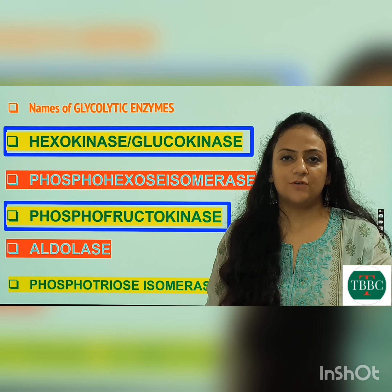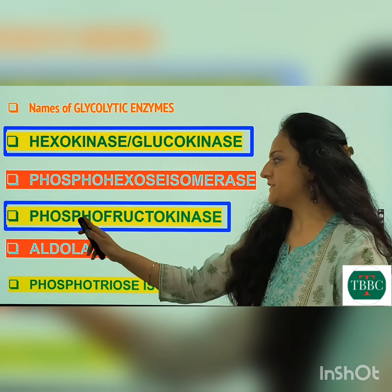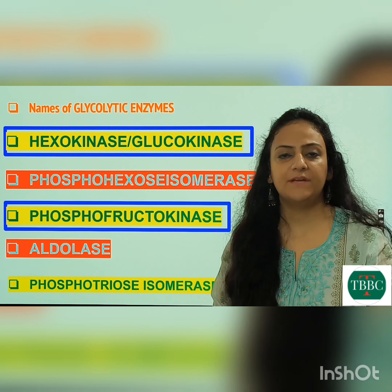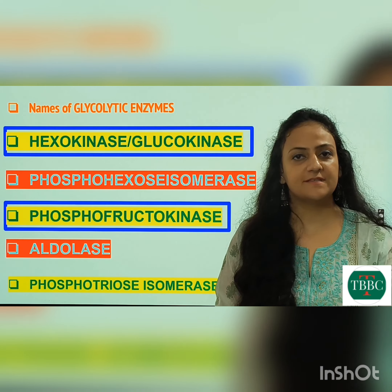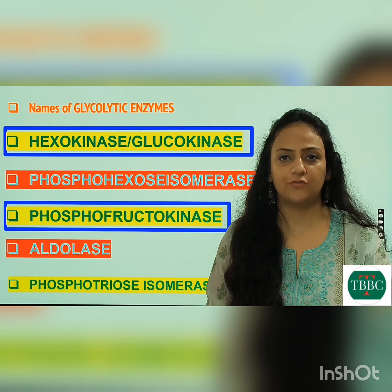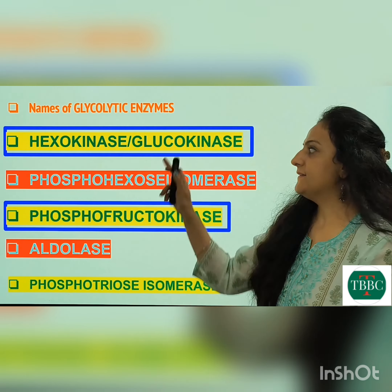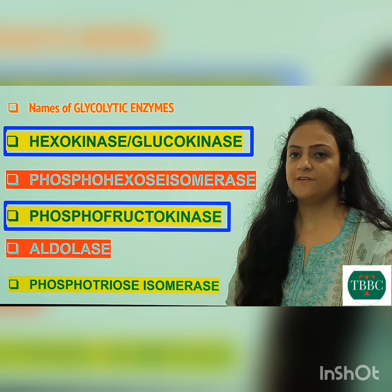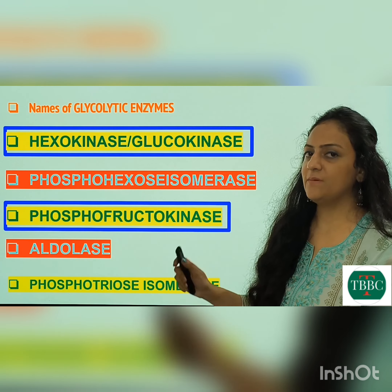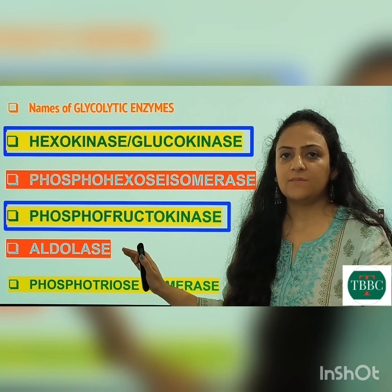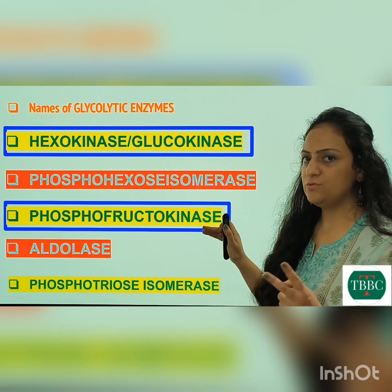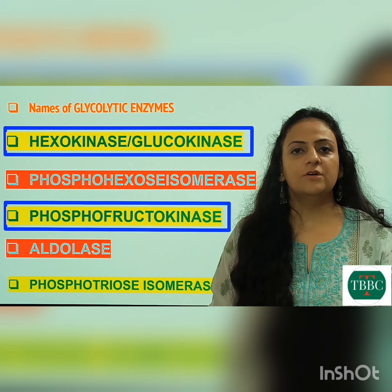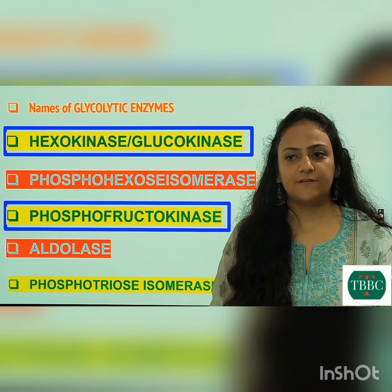Glucose 6-phosphate is converted to fructose 6-phosphate with the help of enzyme phosphohexose isomerase. Then fructose 6-phosphate is again phosphorylated with the help of enzyme phosphofructokinase in the presence of ATP and magnesium to fructose 1,6-bisphosphate. Up to this point it is the energy investment phase, where ATP is being utilized.